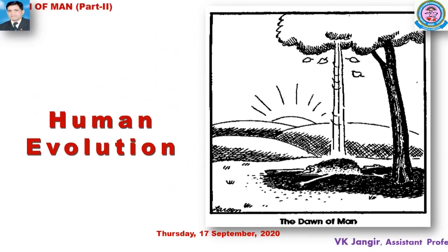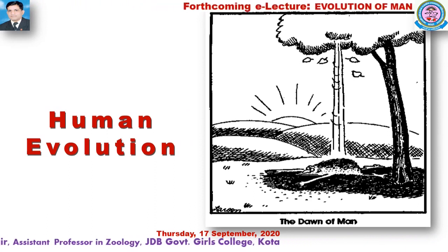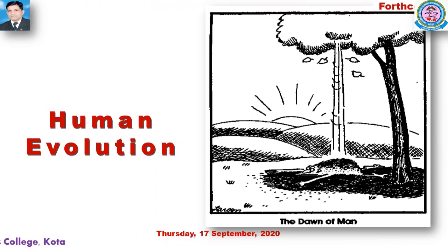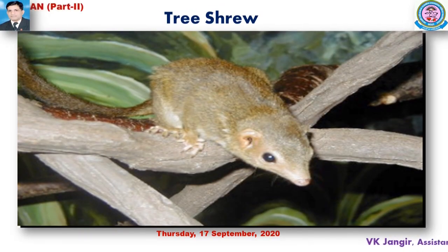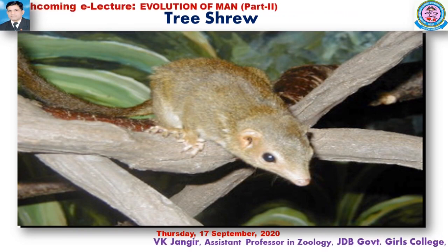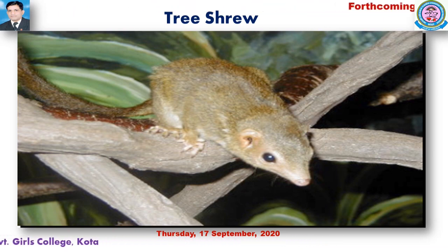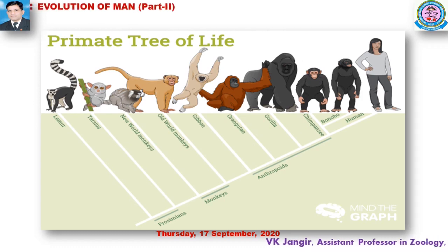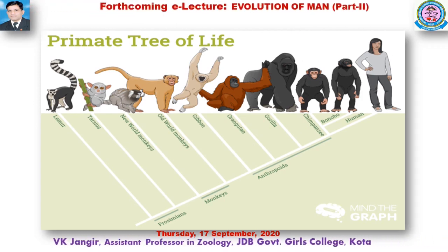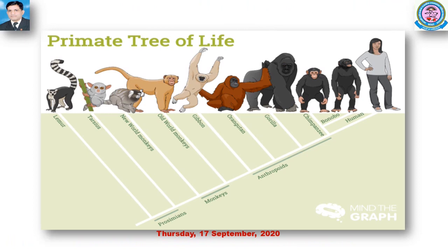This is the hypothetical diagram of human evolution. The tree shrew is considered the originator, a tree-dwelling animal from which all types of mammals and primates have evolved. This is the primate tree of life, showing all types of primates divided into two parts: prosimians and simians.